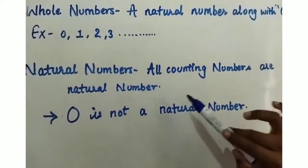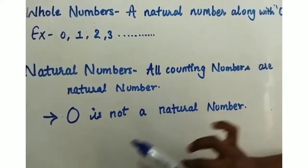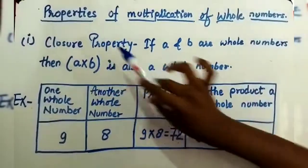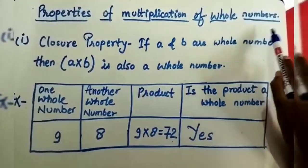What is natural number? All counting numbers are natural numbers but 0 is not a natural number. And we also learn about the property of multiplication of whole numbers.